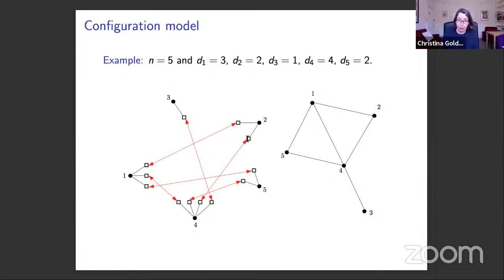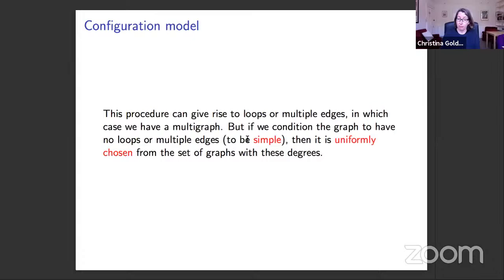In general we certainly get a multigraph, but if we condition the object to have no loops and no multiple edges — in other words, to be simple — then it turns out it's uniformly chosen from the set of graphs with those given degrees.